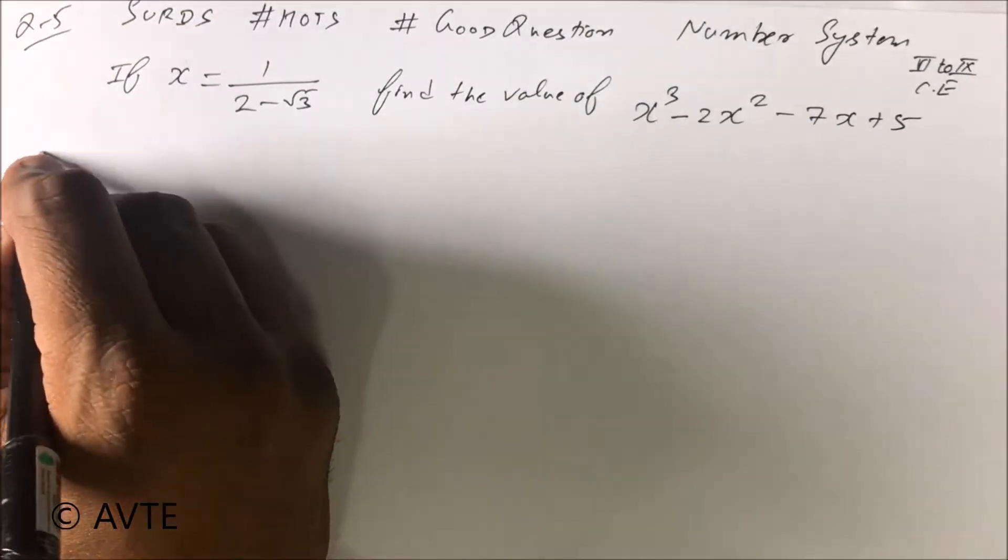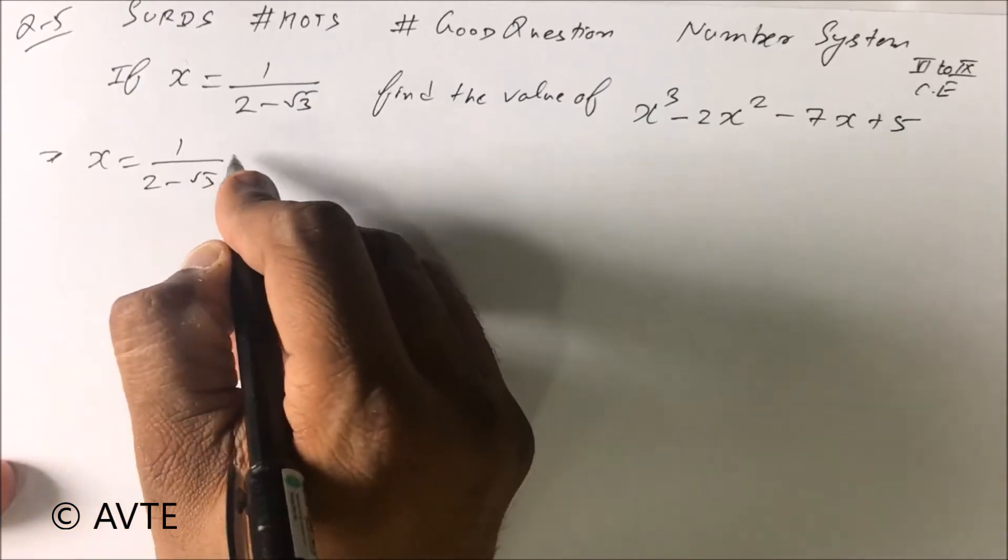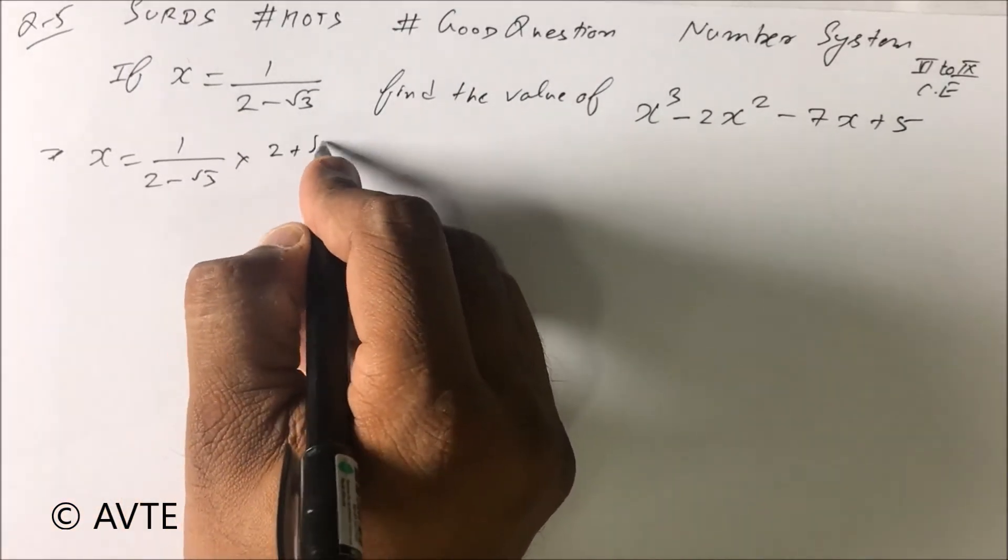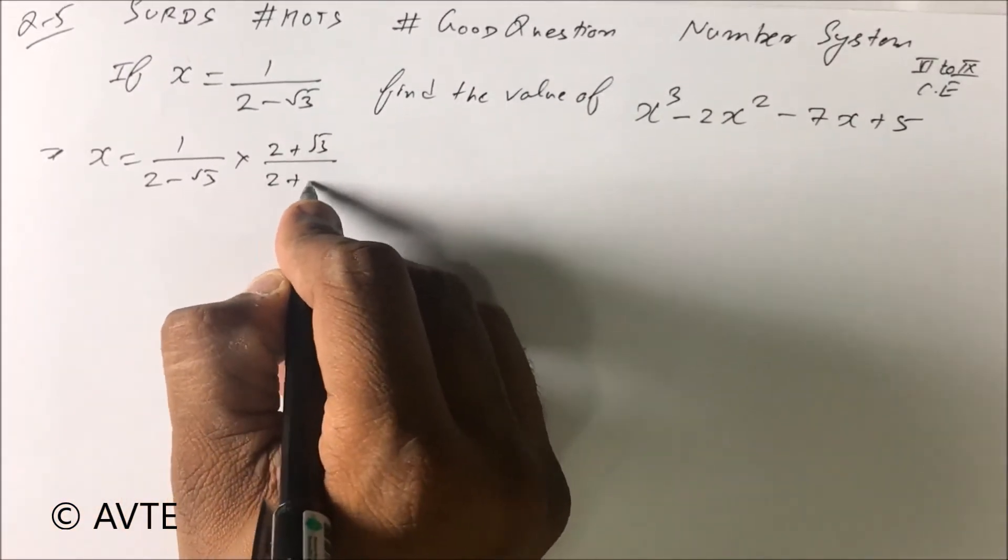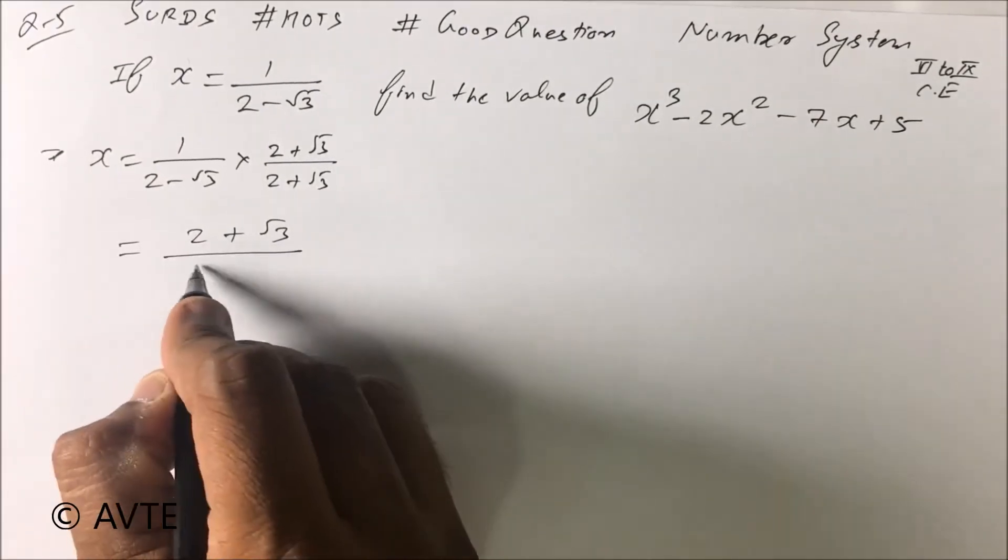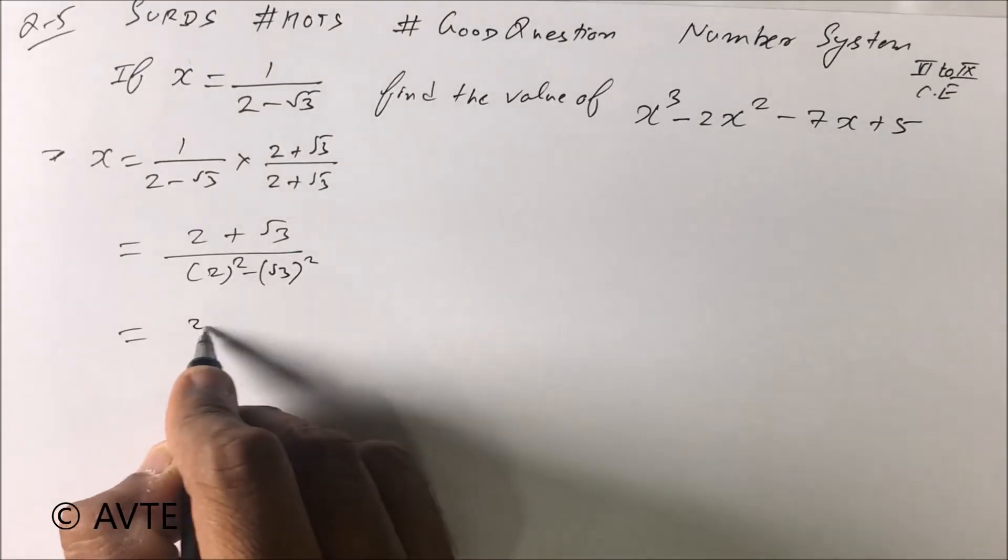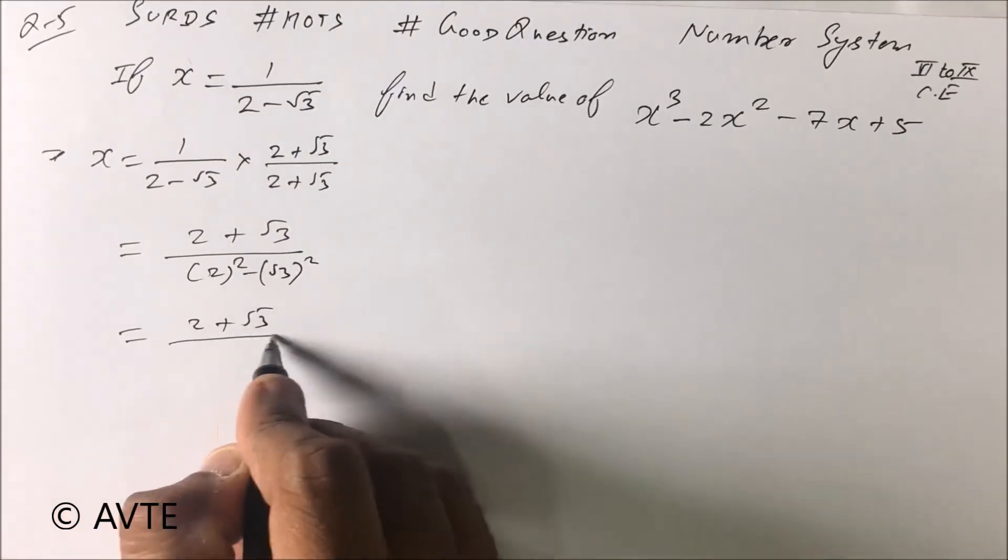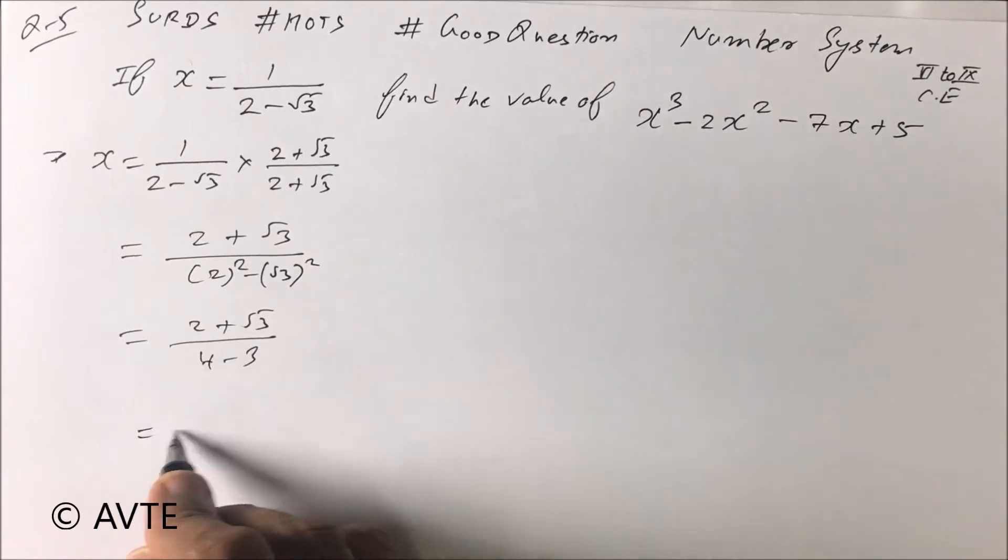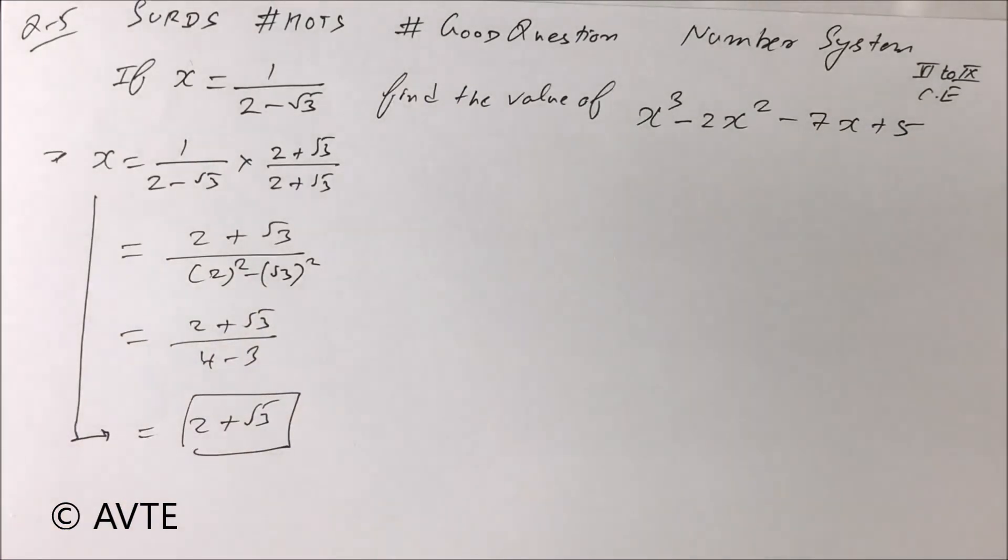So first we have to rationalize. X equals 1 upon 2 minus root 3. Using a minus b, a plus b, this is 2 plus root 3 upon 2 square minus root 3 square. That is 2 plus root 3 upon 4 minus 3, which equals 2 plus root 3. This is the value of X.